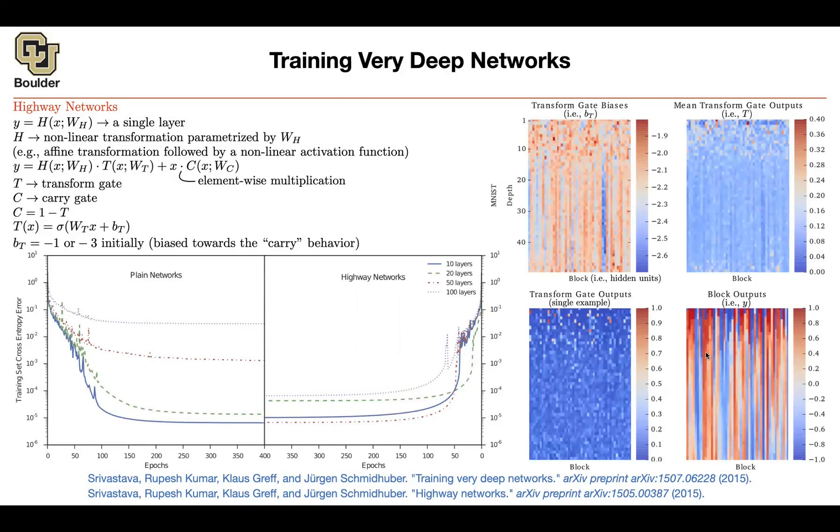I think it's a good time to stop and answer questions. So just curious, on the plots on the left side of your screen, going back a little bit. So yeah, for plane networks, it seems like the 10-layer plane network has a very similar cross-entropy error as a 50-layer highway network. I'm assuming that the testing errors are pretty different between the two? Yes, absolutely.